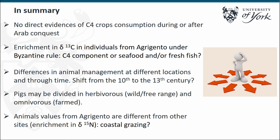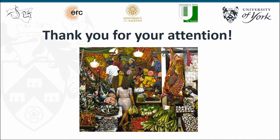We can see differences in the management of pigs — some are wild free-range and others are omnivorous, so very likely farmed. The animal values for Agrigento are different from the other sites, enriched in Delta 15N, which may suggest coastal grazing for these animals.